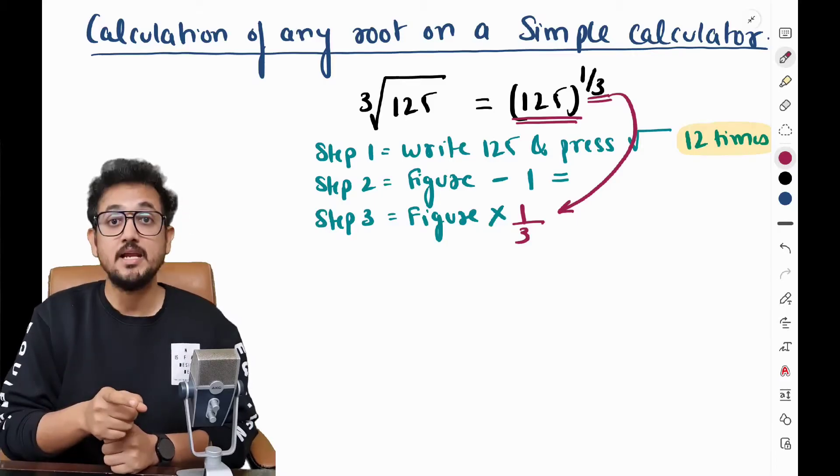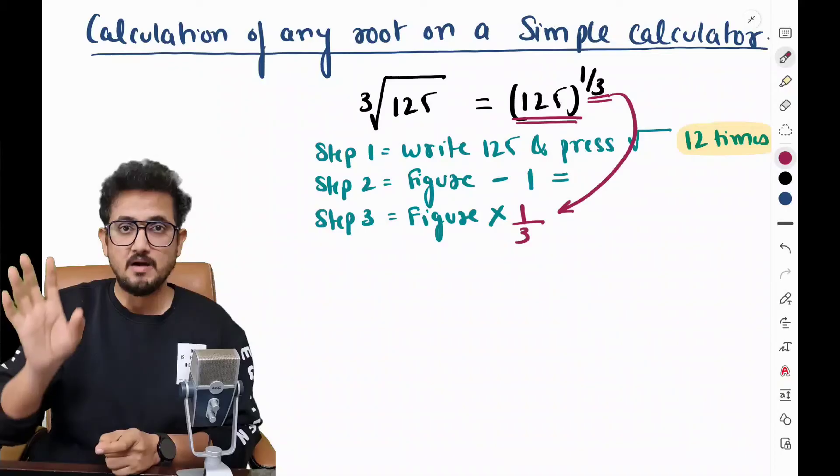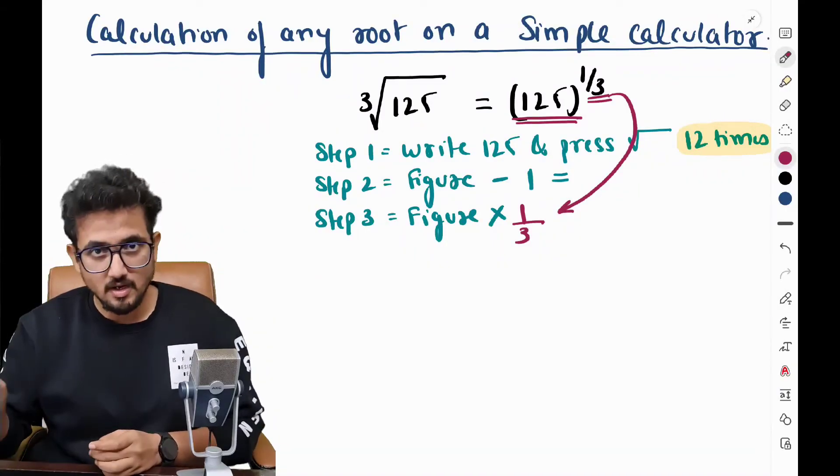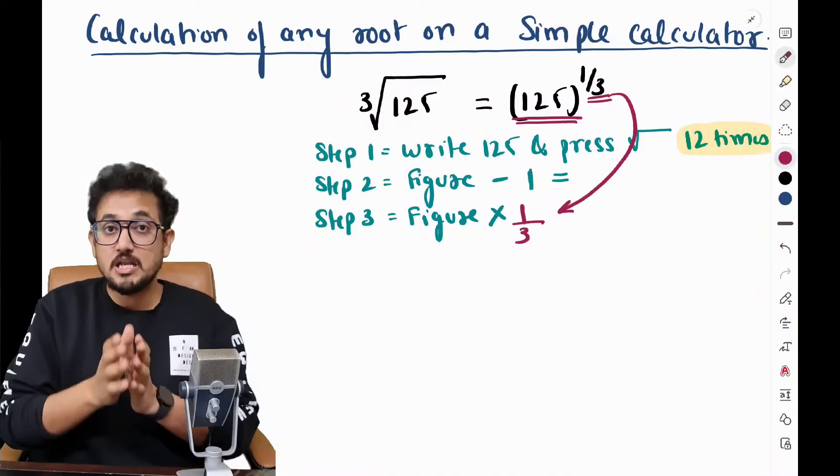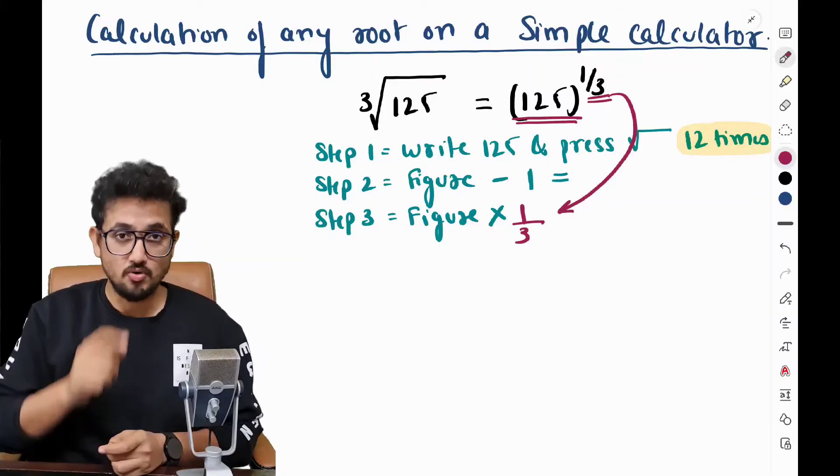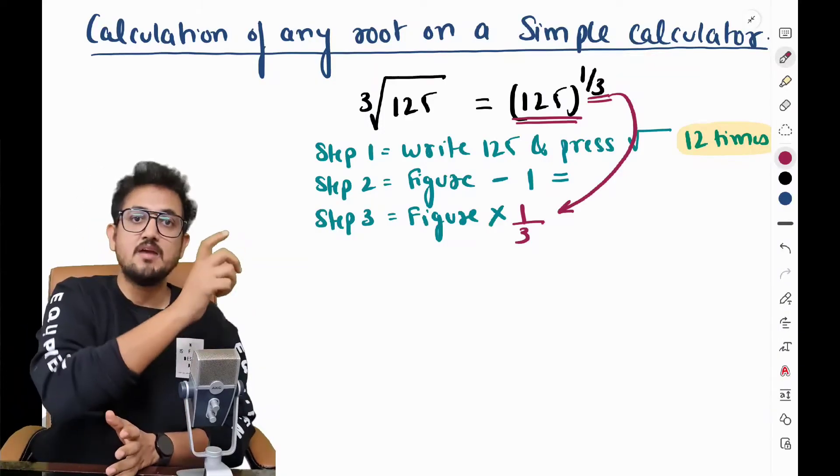Now in this figure, you have to multiply it by the raise to the power, whatever raise to the power it is, one by three or 2.5 or 121 or whatever raise to the power you have. You have to multiply this number, whatever comes by the raise to the power. So here the raise to the power is one by three. So what I'm doing, the figure multiplied by one by three.